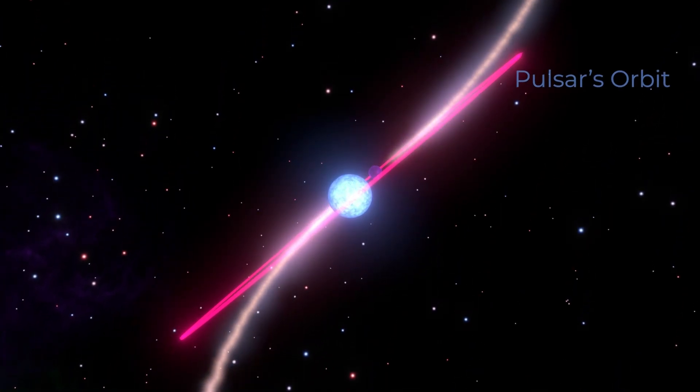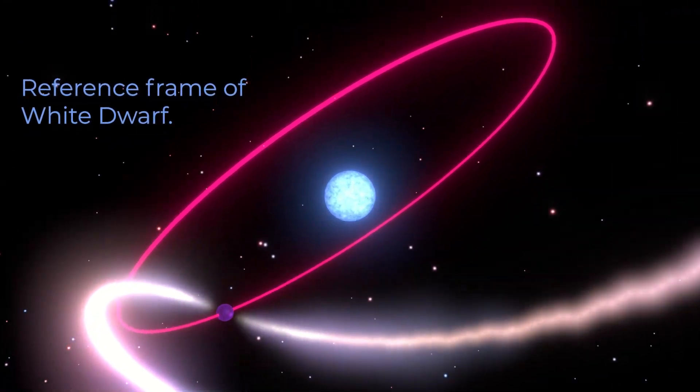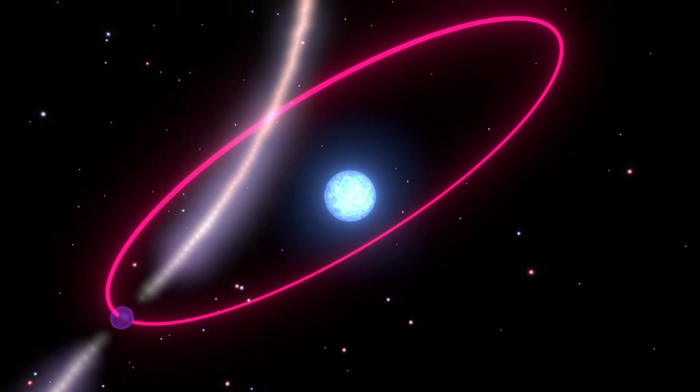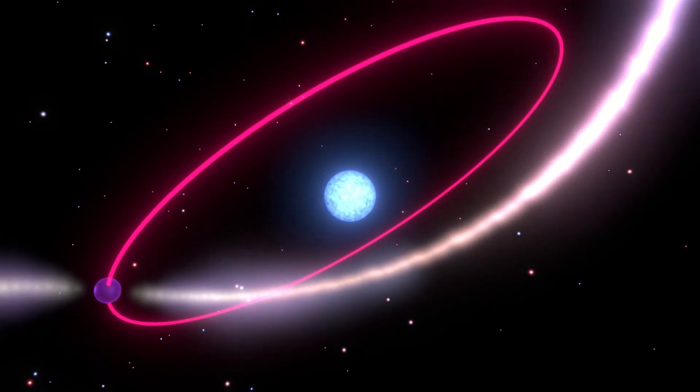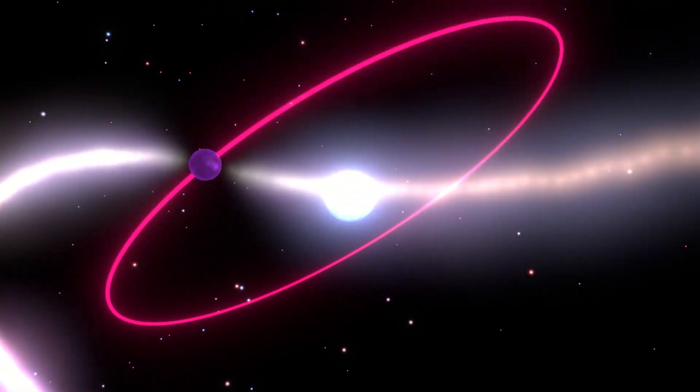Our team has been mapping the orbit of the pulsar in a series of campaigns since 2003. We found that not only is the pulsar's orbit shrinking because of the emission of gravitational waves, its entire orbit was also tumbling in space. But why?